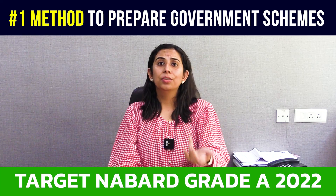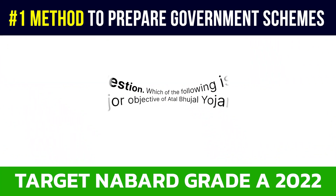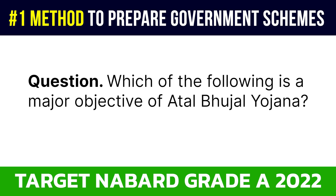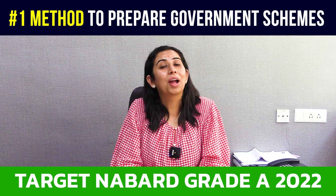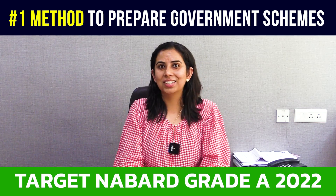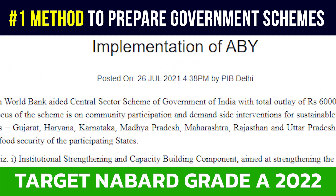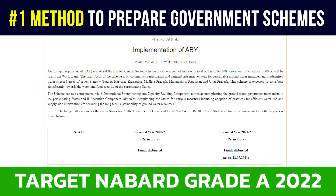Let's see another example. Question number 2 on your screen is about the objectives of Atal Bhujal Yojana. Again, why was this question asked in the examination? For two reasons: this scheme was in news in the month of July 2021 when the exam was in September 2021, and it can be directly linked to the ARD syllabus under the topic Water Conservation.